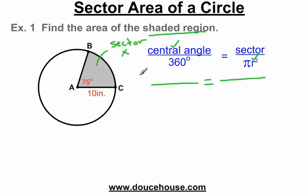Let's set up the proportion. The central angle is 75 degrees divided by 360 degrees equals the sector, which I'm calling x, over pi r squared. Pi is 3.14 and the radius is 10 inches. I'm going to keep the units in here. I'm going to simplify the pi r squared before I go any further. If I type in my calculator 3.14 times 10 squared, I get 314 inches squared.